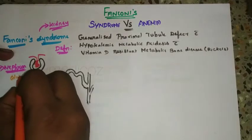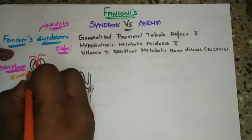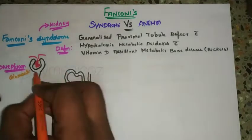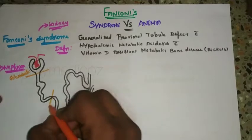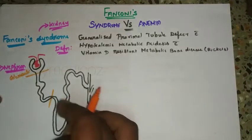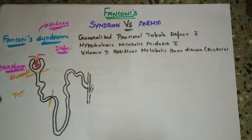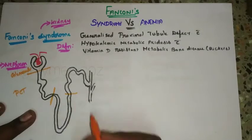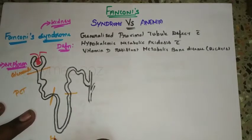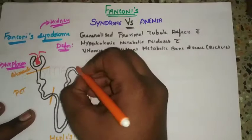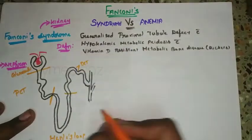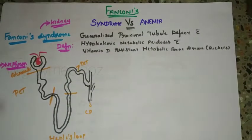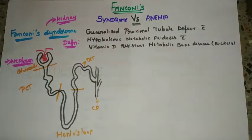Let's go over the nephron. The first part is the glomerulus, which is cup-shaped. Then there is the proximal convoluted tubule, followed by the Henle's loop, then the distal convoluted tubule, and finally the collecting duct. This is the typical nephron.